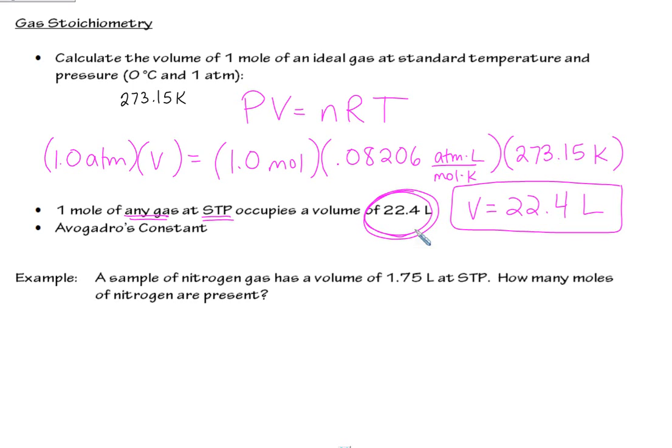Here's where you might be able to use it. A sample of nitrogen gas has a volume of 1.75 liters at standard temperature and pressure. How many moles of nitrogen are present? You could use PV=nRT. You could set this up using PV=nRT and solve for moles. Or you could set up a little proportion.